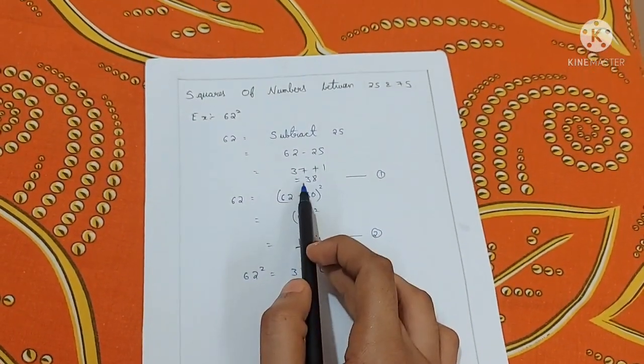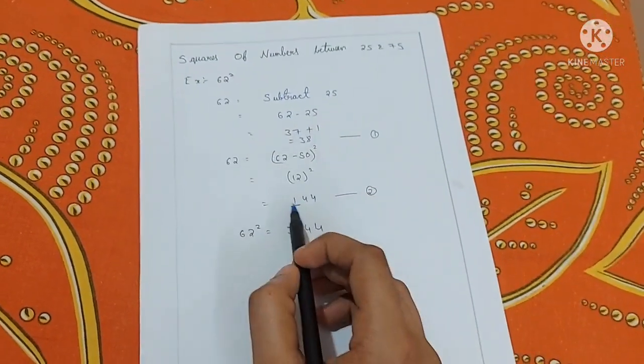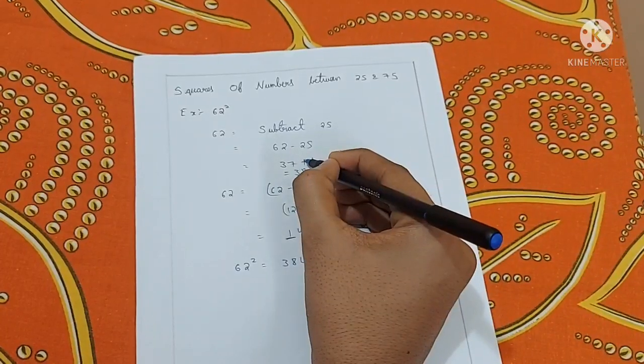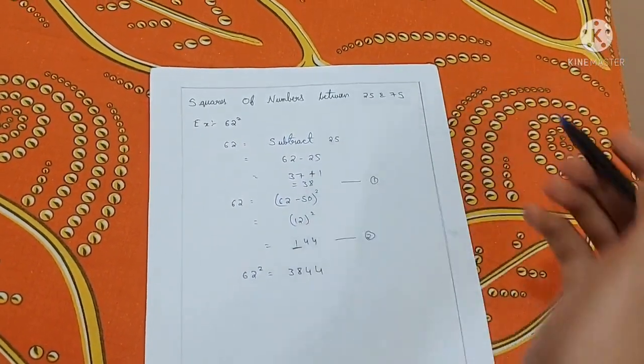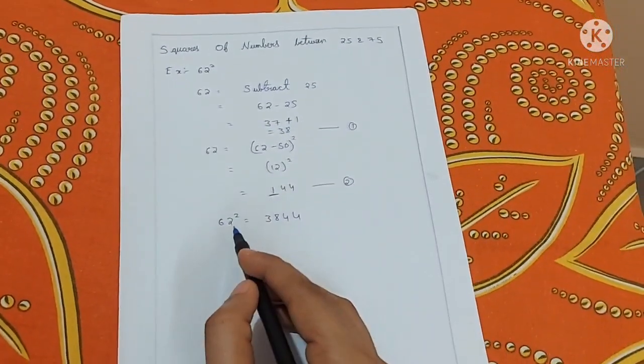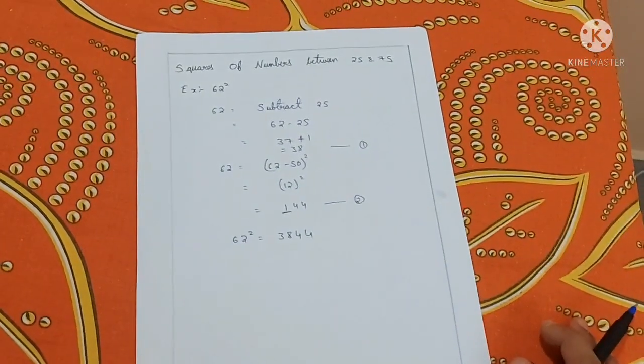This is the last 2 digits number and this is the first 2 digits number. Now this 1 will be a carry over to the 37. That is 37 plus 1 equals 38. Now this is the required answer, 3844.